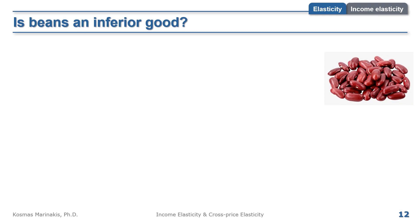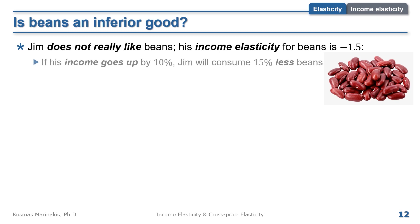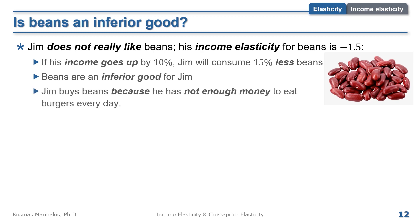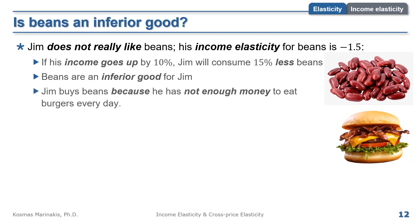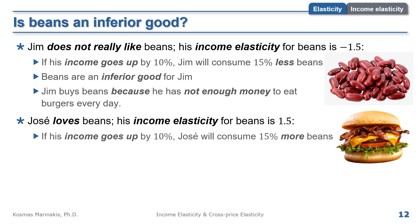Other examples of inferior goods include rice with income elasticity of minus 0.44 and beans with minus 0.49. Consider Jim from Arizona, who doesn't really like beans. His income elasticity for beans is minus 1.5, meaning if his income goes up by 10%, he will consume 15% less beans — he buys them only because he can't afford burgers every day. Now consider Jose from Acapulco, who loves beans. His income elasticity for beans is positive 1.5, so if income rises by 10%, he consumes 15% more beans. For Jose, beans are a normal good.